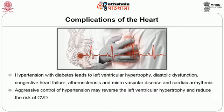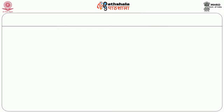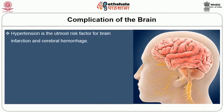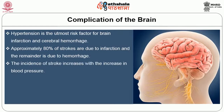Aggressive control of hypertension may reverse left ventricular hypertrophy and reduce the risk of cardiovascular diseases. Diastolic dysfunction is an early consequence of hypertension-related heart disease. Hypertension is the utmost risk factor for brain infarction and cerebral hemorrhage. Approximately 80 percent of strokes are due to infarction and the remainder is due to hemorrhage. The incidence of stroke increases with the increase in blood pressure.